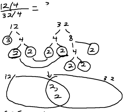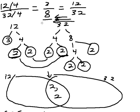12 divided by 4 is 3. 32 divided by 4 is 8. So 12 32nds can be simplified, can be reduced to, can be expressed in lowest terms, as 3 eighths.